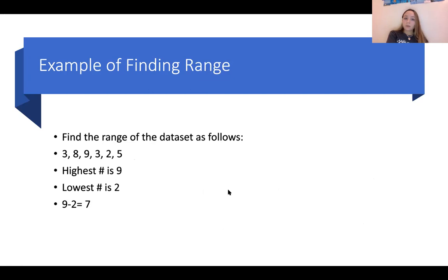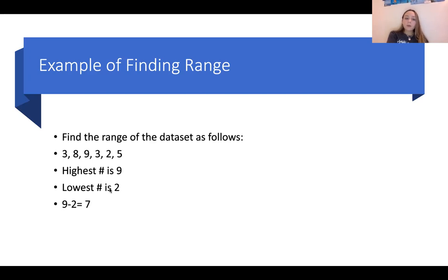Finally, for finding the range, our data set is 3, 8, 9, 3, 2, 5. The range is the difference between the greatest number and the smallest number in the data set. The greatest number is 9 and the lowest is 2. So 9 minus 2 equals 7 — our range is 7.